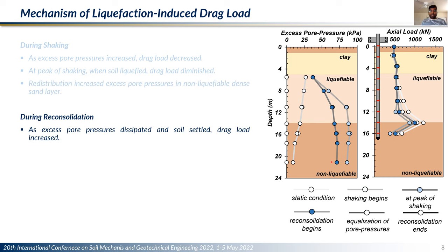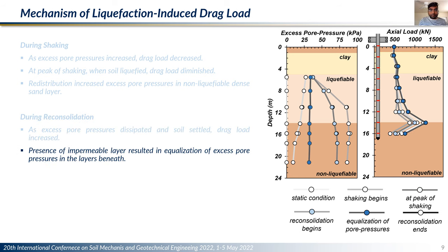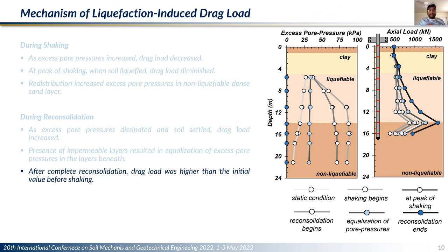When shaking stops, excess pore pressure starts to dissipate and soil settles, resulting in the development again of negative skin friction and drag load. Since this happens from bottom to top, drag load also develops from bottom to top. Consequently, the tip load also increases and the axial load distribution starts moving towards the right. Because of the low permeability of the clay layer, all the excess pore pressures below it equalize and continue to equalize until fully dissipated. After complete reconsolidation, the soil completely settles. The drag load on the pile increases even higher than the initial drag load it started with, and correspondingly the pile tip load also increases.